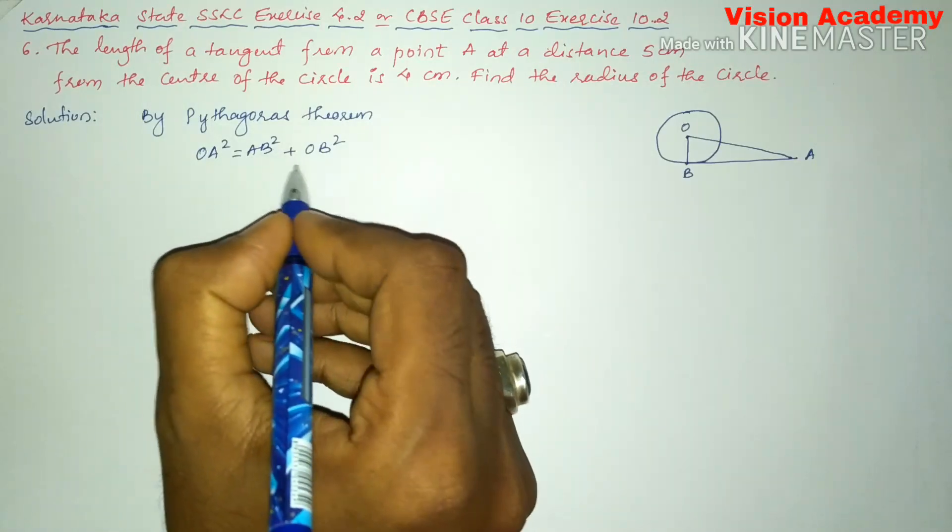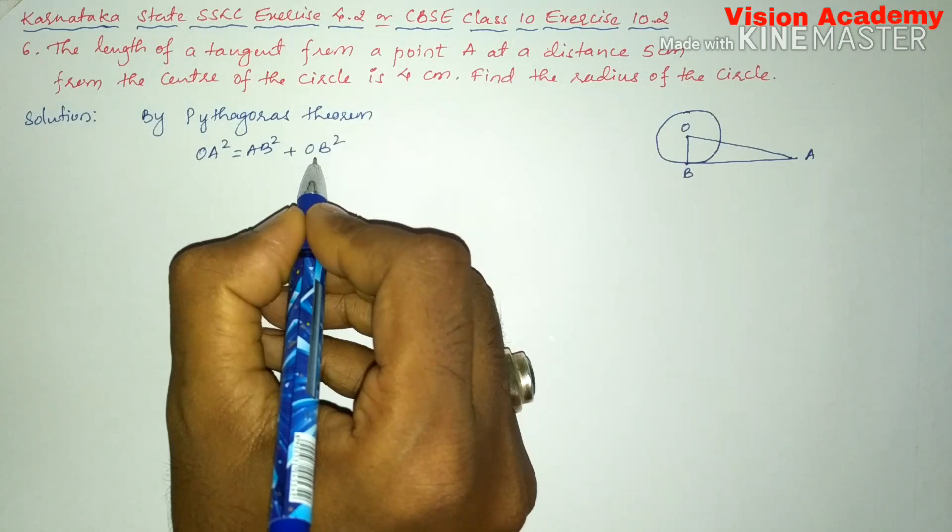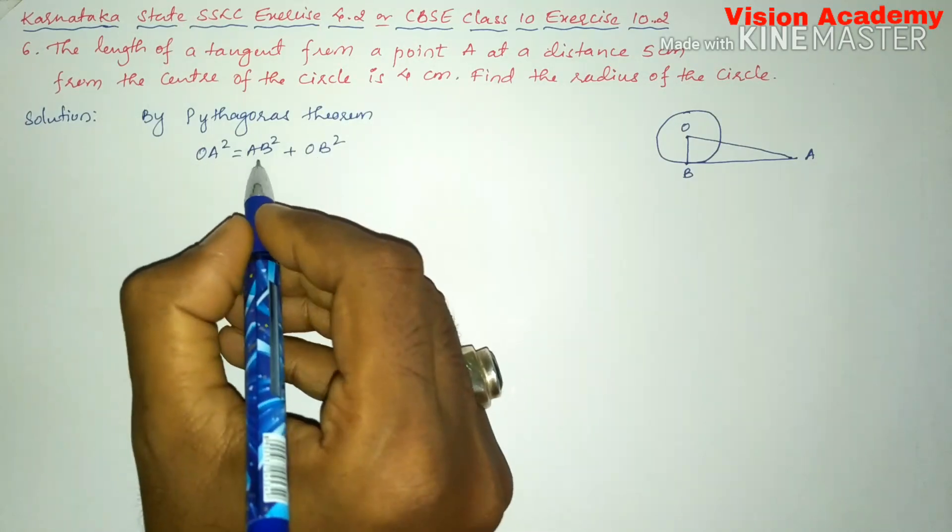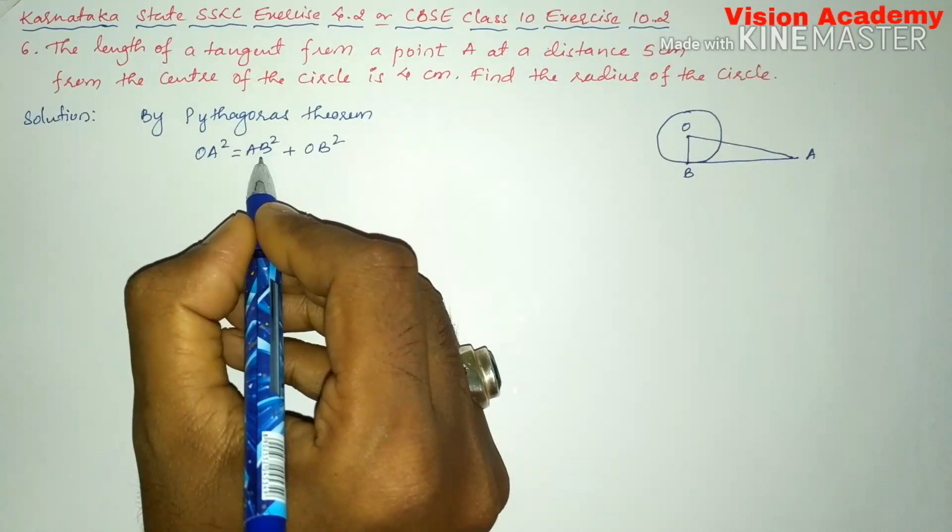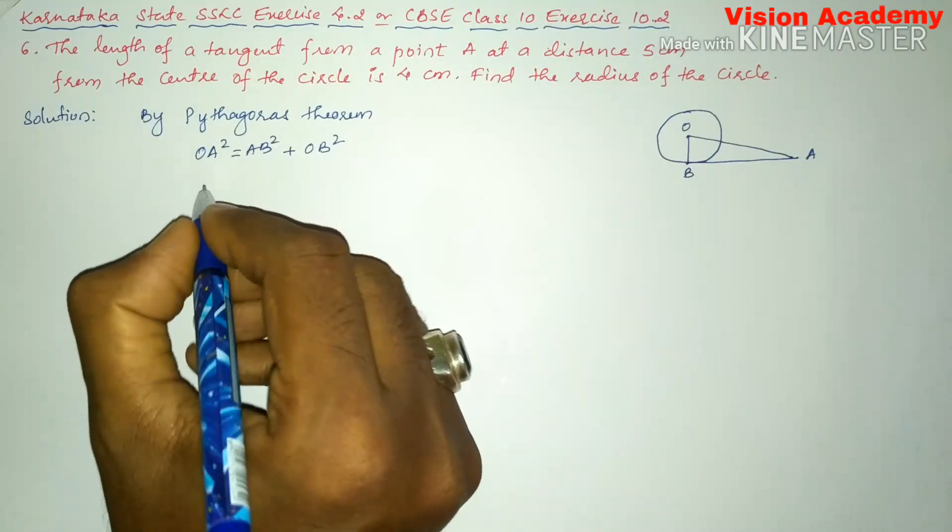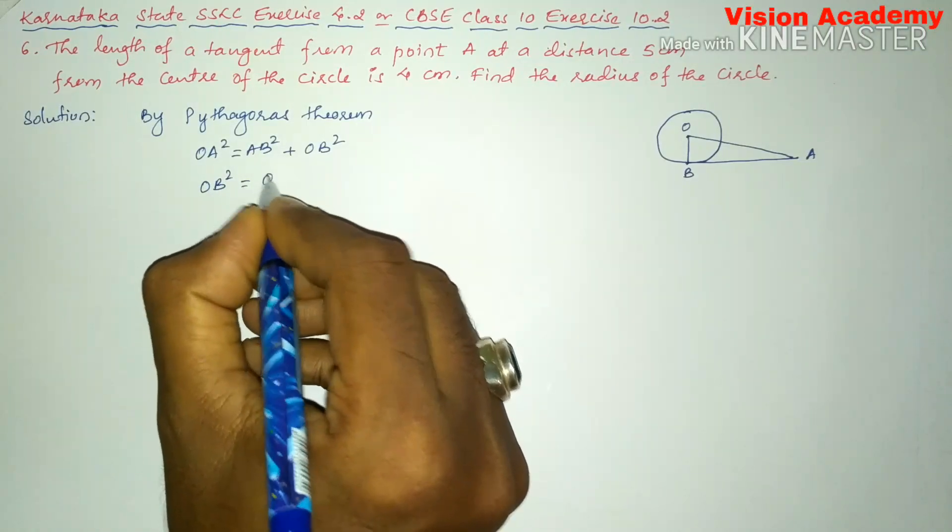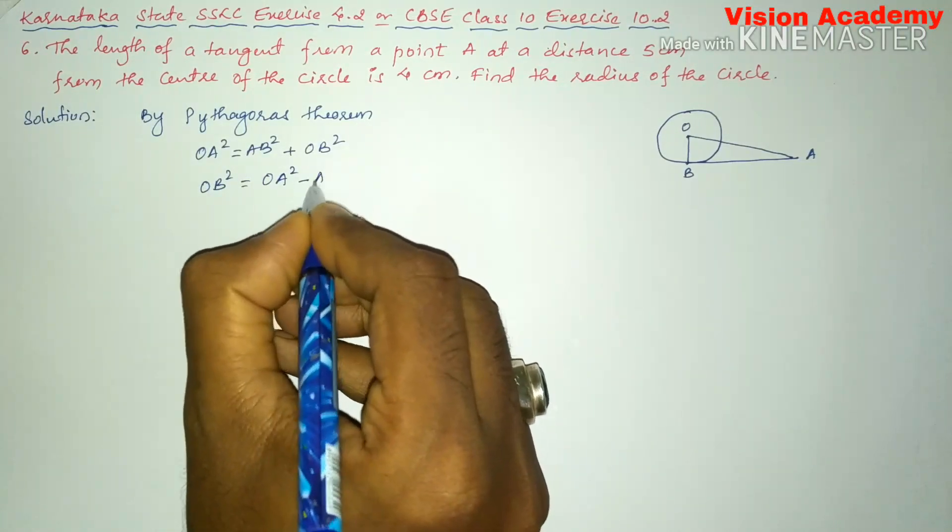Now, let us transform this AB square from RHS to LHS. It will become OB square is equal to OA square minus AB square.